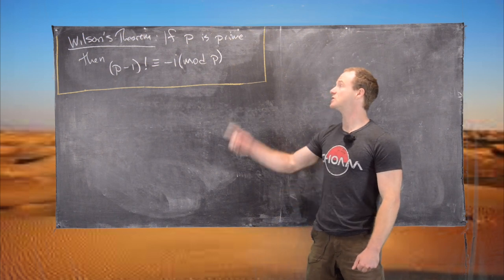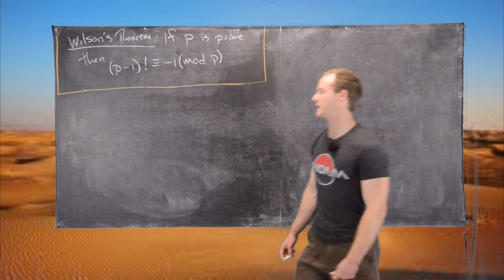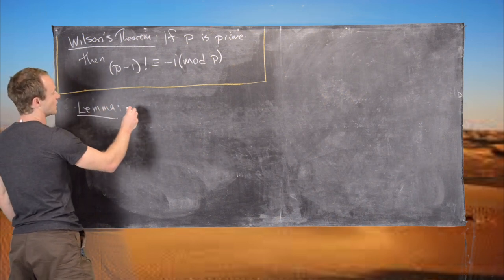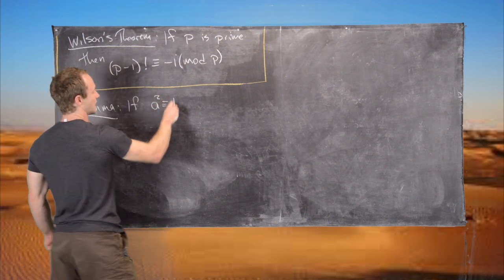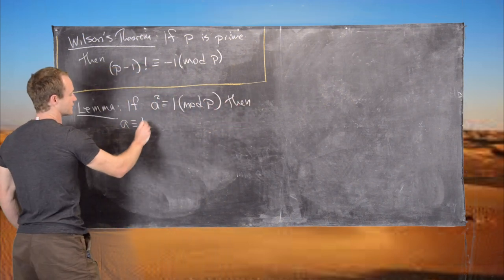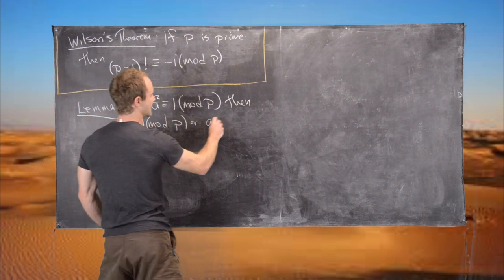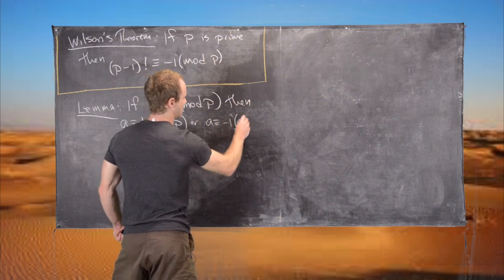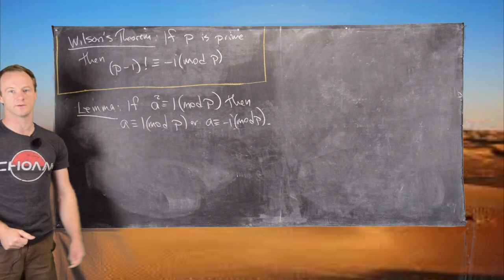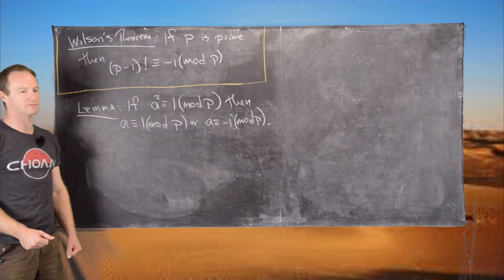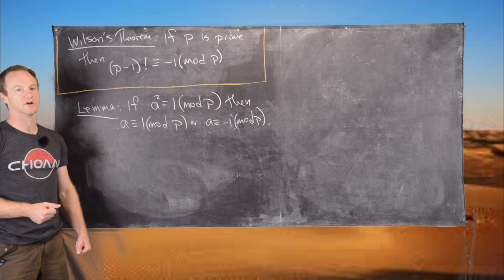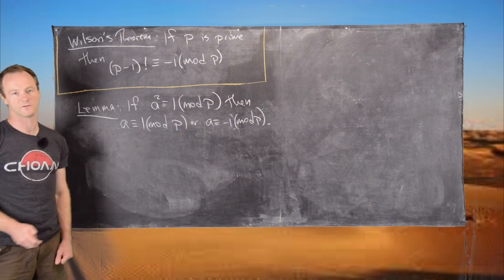I'll let you guys check that out if you want to. Before we prove Wilson's Theorem, we need the following lemma: if a squared is congruent to 1 mod p, then a is congruent to 1 mod p or a is congruent to negative 1 mod p. In other words, the only two square roots of 1 mod a prime are 1 and negative 1. This makes arithmetic modulo primes pretty similar to arithmetic over the real numbers, because in the real numbers the only two square roots of 1 are 1 and negative 1 as well.